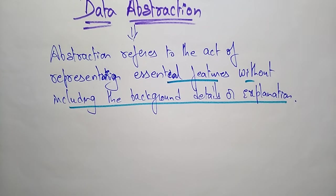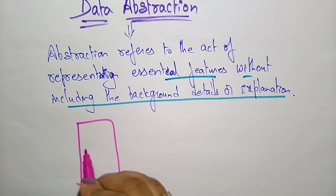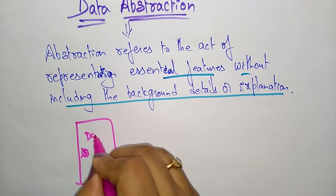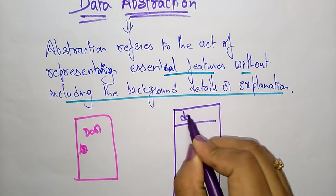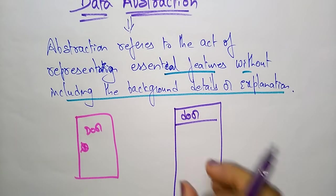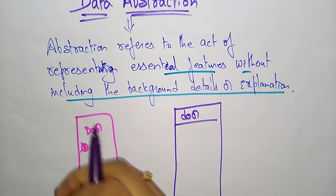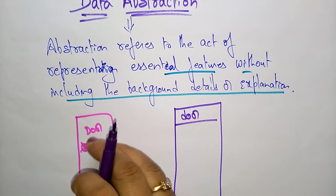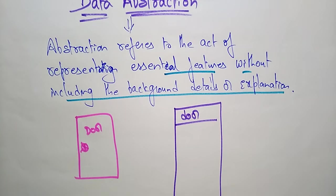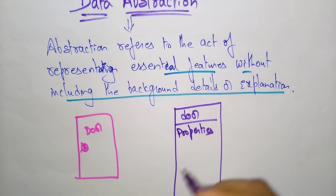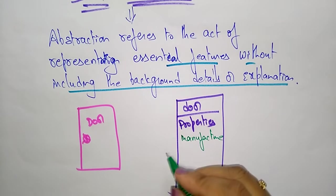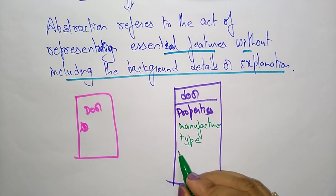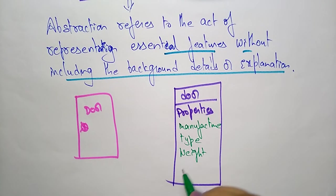Let me explain with an example. Let us take a door — a door is an example, a class. So a door is a class. What I am explaining about this door means I am abstracting the data. What type of data am I going to abstract? Only the essential features, without including the background details. So the properties of the door are: manufacturer, type, weight, and opening mechanism.